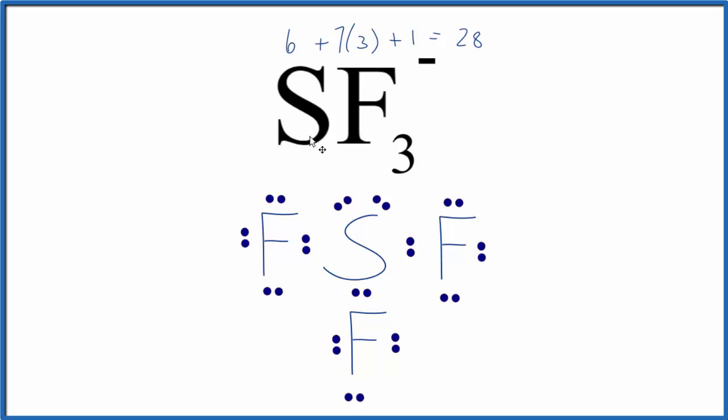We're done. This is the Lewis structure for SF3-. One last thing, we should put brackets around it and a negative sign to show that it's an ion.